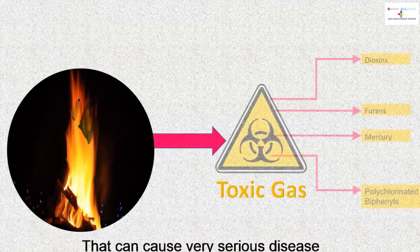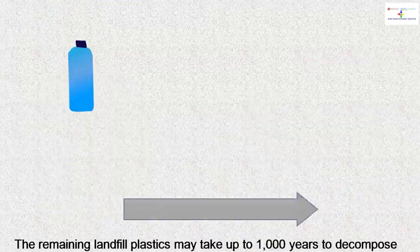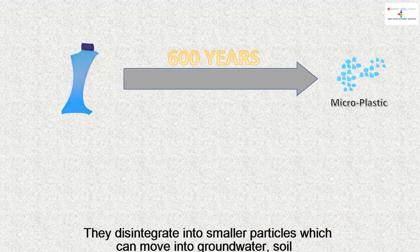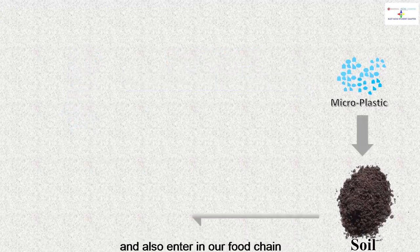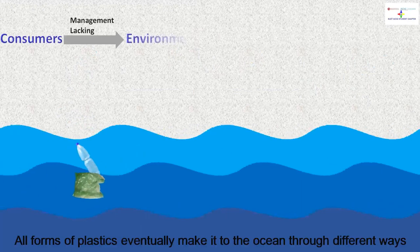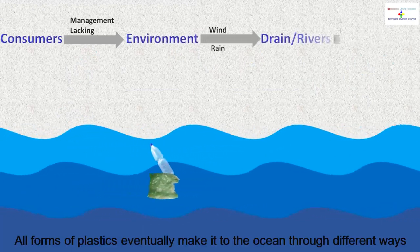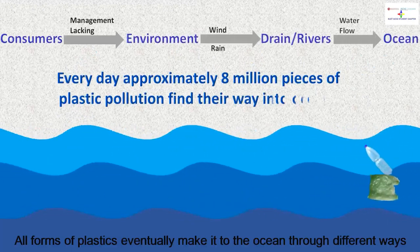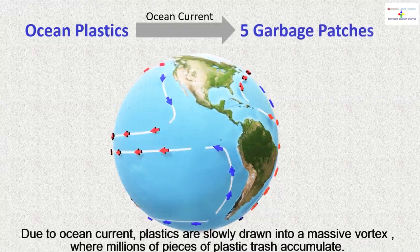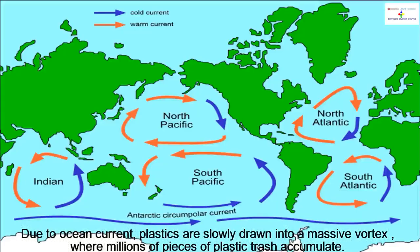Twelve percent of discarded plastics are burnt, releasing toxic gases that can cause very serious diseases. The remaining landfill plastics may take up to a thousand years to decompose. They disintegrate into smaller particles which can move into groundwater and soil. All forms of plastics eventually make their way to the ocean through different pathways, where ocean currents slowly draw them into a massive vortex where millions of pieces of plastic trash accumulate.